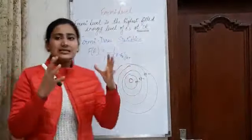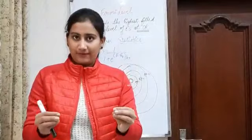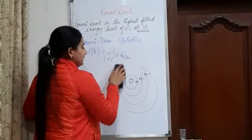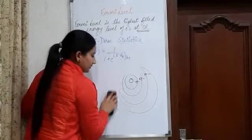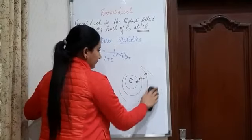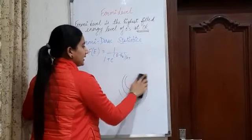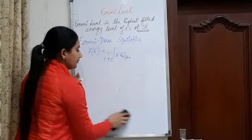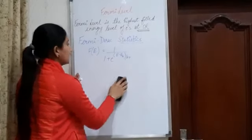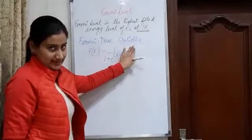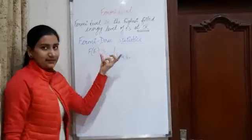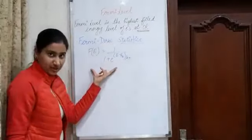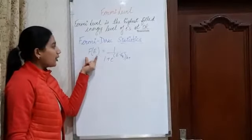So this is the simple definition of Fermi level. Now we are going to see mathematically that there is a Fermi level — we are going to prove it. For this we will be using Fermi-Dirac statistics. Fermi and Dirac were the two scientists who gave us the equation to find the probability.